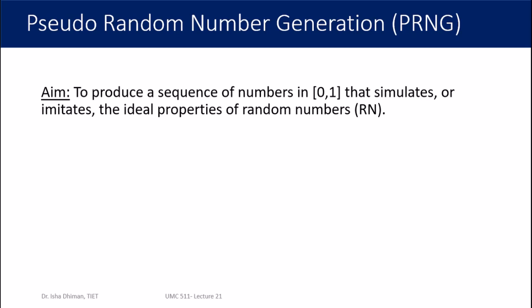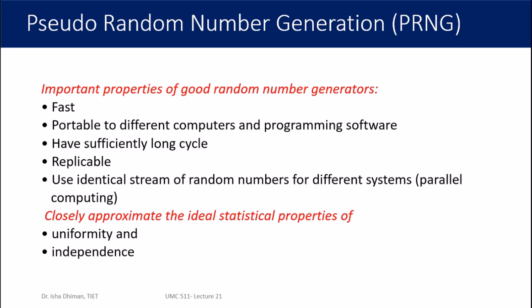Despite this, the aim of all PRNG algorithms is the same: to produce a sequence of numbers in the interval 0 to 1 that simulates or imitates the ideal properties of random numbers. Even if your random numbers are not in this interval, we can always convert them into the range 0 to 1. The key question is: what properties should a good random number generator have?